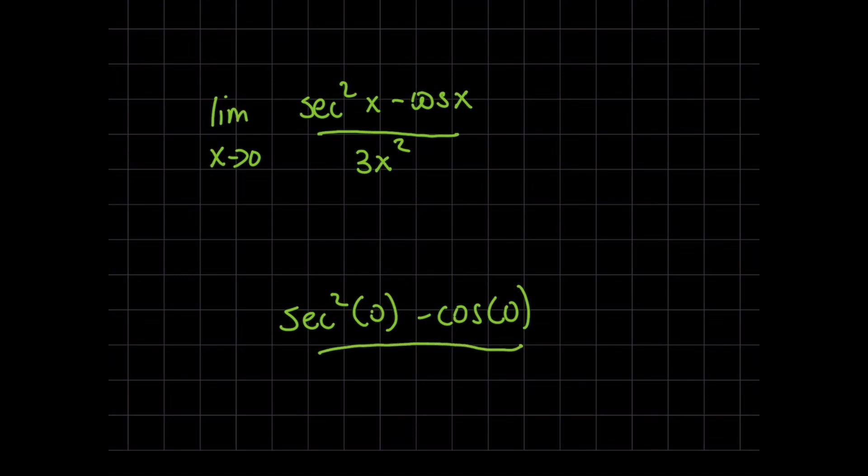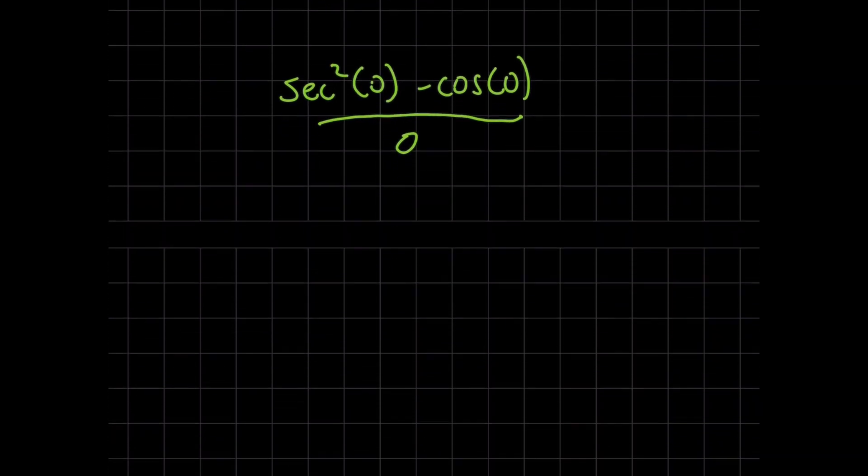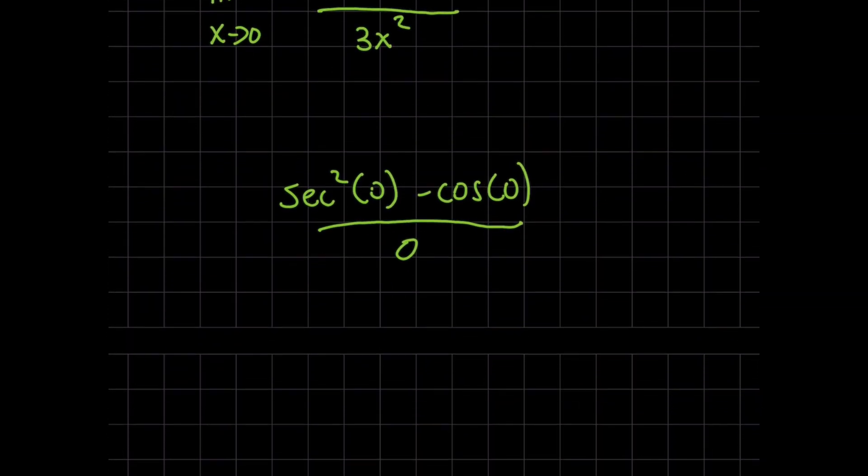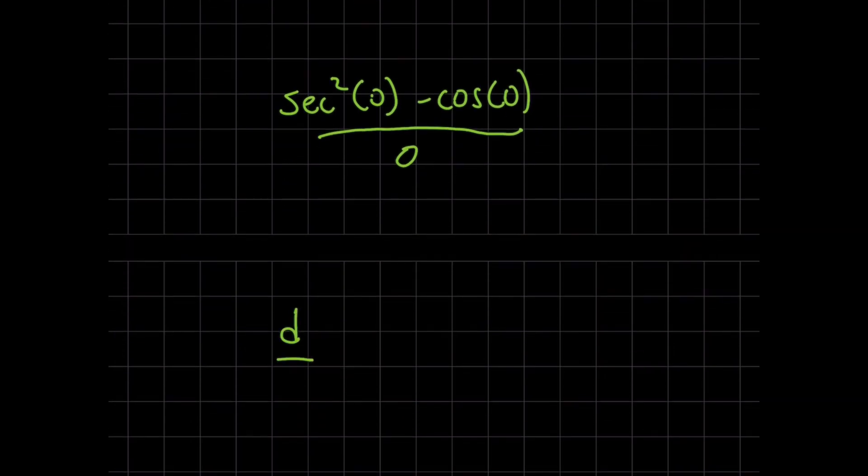How about the bottom? Well, that's just going to be zero itself. So yes, this is an indeterminate form where we actually can use L'Hopital's rule a second time. And this is where it gets a little dicey. Because for the numerator, secant squared of x minus cosine of x, if I want to find this new expression here and see what it evaluates to.